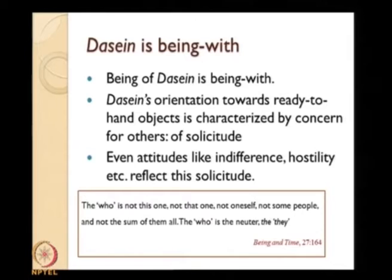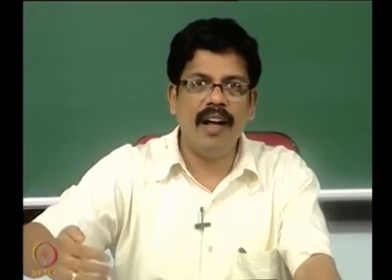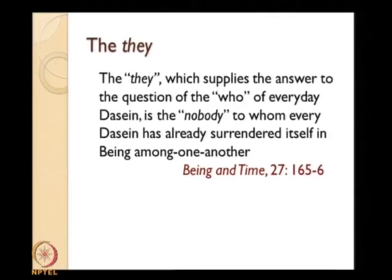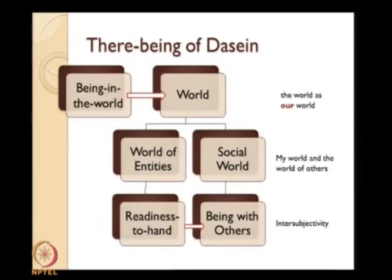Heidegger writes: 'The who is not this one, not that one, not oneself, not some people, and not the sum of them all. The who is the neuter, the they.' There is a concept of 'the they' — referring to the social world — which you cannot specify as any particular person; it is a kind of neuter they. 'The they which supplies the answer to the question of the who of everyday Dasein is the nobody to whom every Dasein has already surrendered itself.'